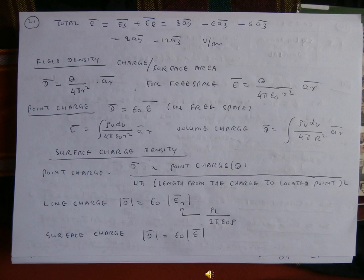And the surface charge density equation: the point charge is equal to D-Veta multiplied by point charge Q divided by 4π multiplied by the length from the charge to the located point squared. And also the line charge is D-Veta equal to ε₀ multiplied by ar beta.